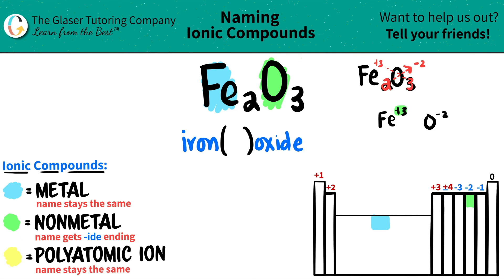So in my Roman numeral, I'm just going to put a three. And that is the end. So Fe2O3 is iron three oxide. And there you go.